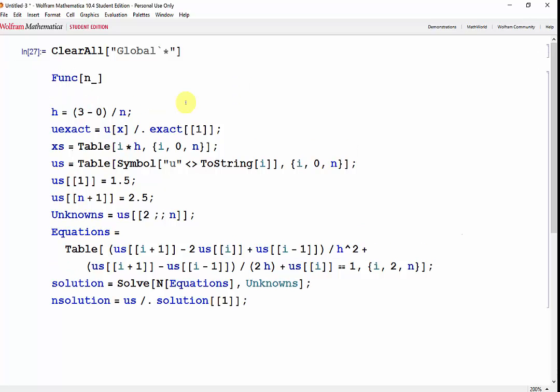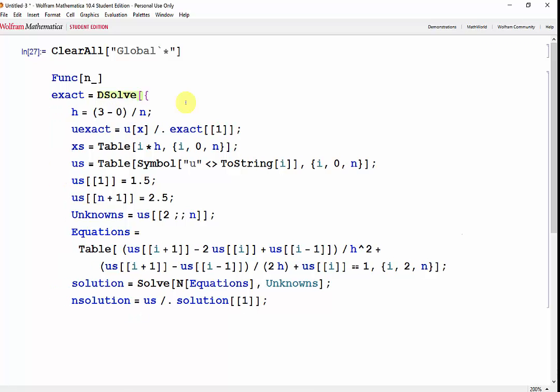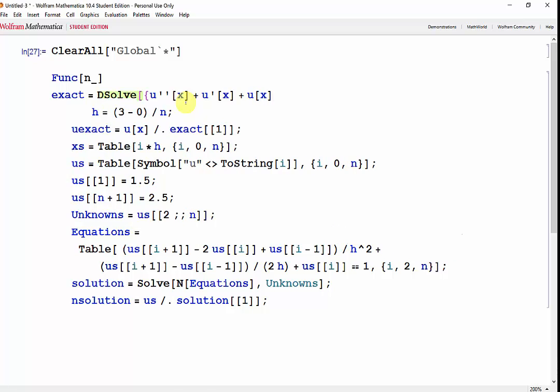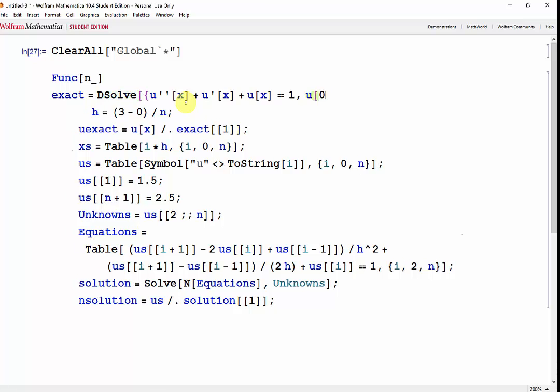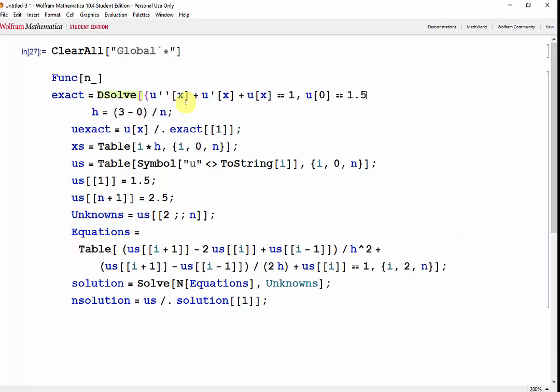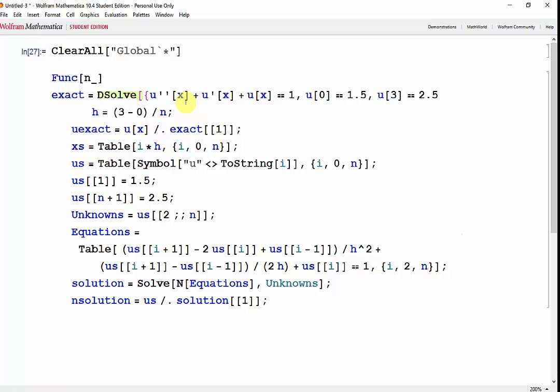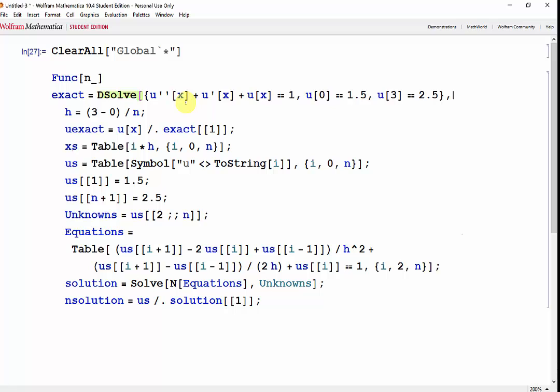We'll need the exact equation to find the maximum absolute difference later on. So we'll DSolve our equation u''[x] + u'[x] + u[x] = 1 with our boundary conditions u[0] = 1.5 and u[3] = 2.5, where we want to solve u with respect to x.